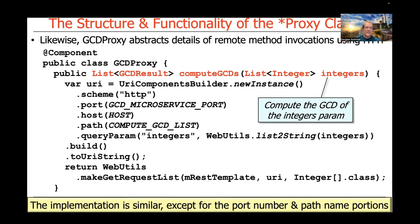The GCD proxy is pretty much the same. The differences are that the port number is different, the path is different, and the query parameter has a different name. Otherwise it's the same basic idea. This is just showing a more complete way of defining all the different aspects of creating an HTTP request using the URIComponentsBuilder helper class.